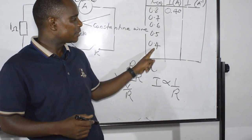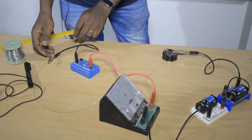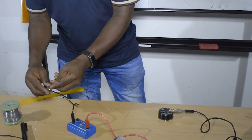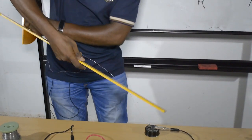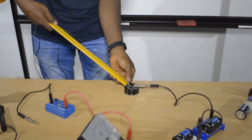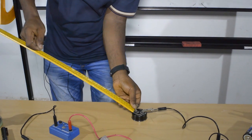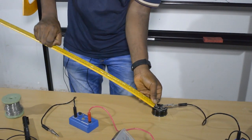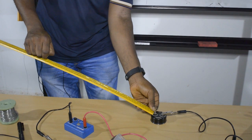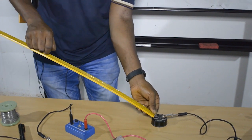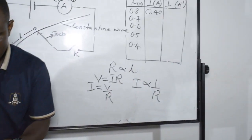The length is now reducing to 40 centimeters — that is 0.4 meters. I'll open the key, drop the length from 0.8 to 0.4. Now it is 40 centimeters, which is halfway that original length. I just wanted you to see the variation in the current to verify whether the relationship is holding.